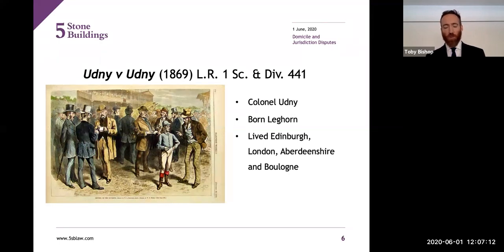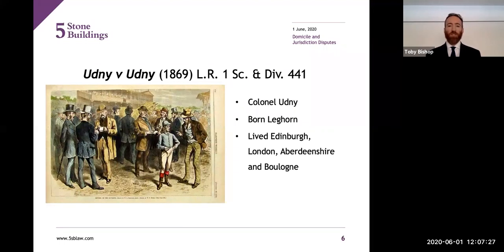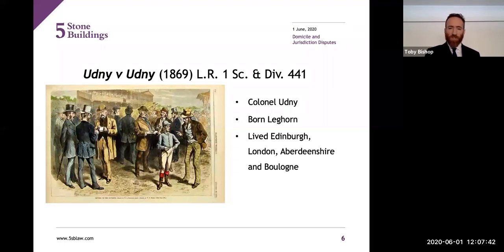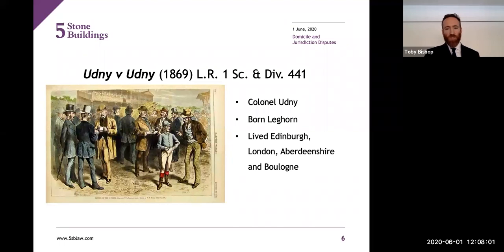Domicile of origin is often mistakenly thought to be where a person is born — it isn't. When young Whitney was 15 his family sent him to Edinburgh; at 18 he became a commissioned officer in the Guards; at 21 he succeeded to the family estate in Whitney in the Dean's Chair; at 33 he married, sold his commission, and moved to London. The Lord Chancellor explained his choice of England as a residence appears to have been considerably influenced by his taste for the sports of the turf — Whitney liked horse racing.